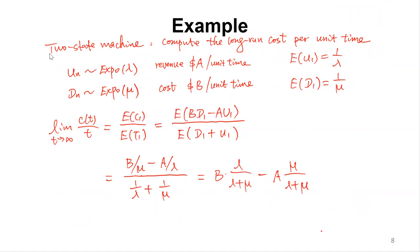Let's compute the long-run cost per unit time for the two-state machine. The uptime is exponential with parameter lambda, so E[u1] equals 1 over lambda. The downtime is exponential with parameter mu, so E[d1] equals 1 over mu. The long-run cost rate is E[c1] over E[t1], where E[t1] equals 1/lambda plus 1/mu. Since E[c1] equals B·E[d1] minus A·E[u1], we get (B/mu minus A/lambda) divided by (1/lambda + 1/mu), which, after rearrangement, gives the long-run cost rate for the two-state machine.